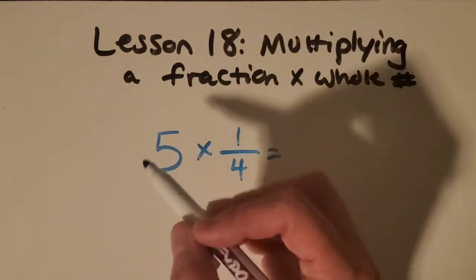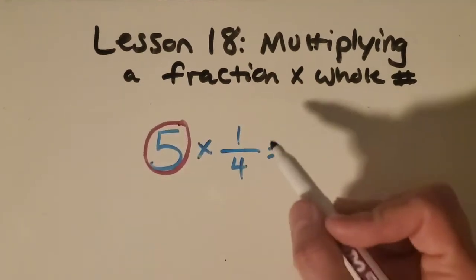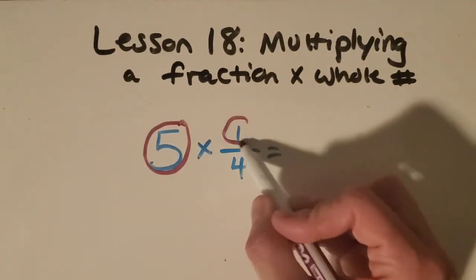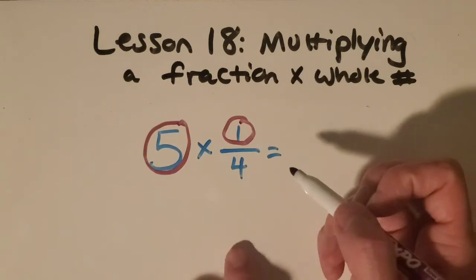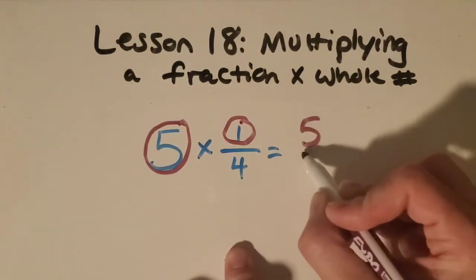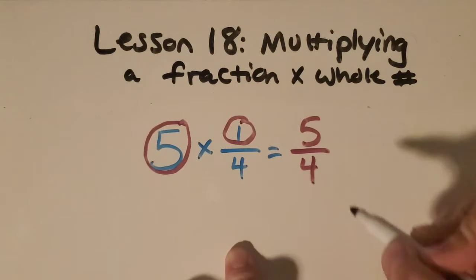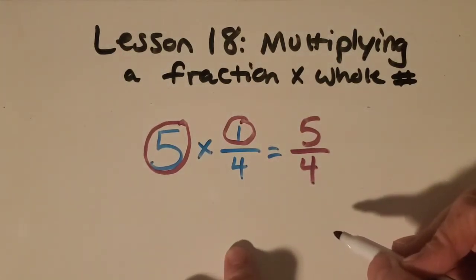So I like to take the whole number, five, times the numerator, one, and I get five. And then I keep the same denominator. But again, I get an improper fraction.